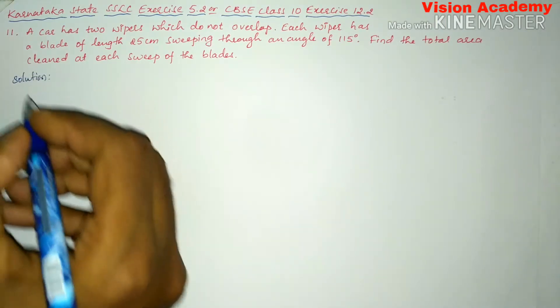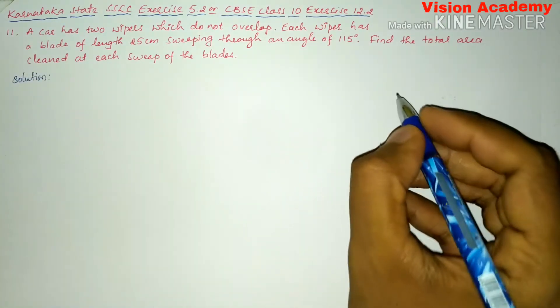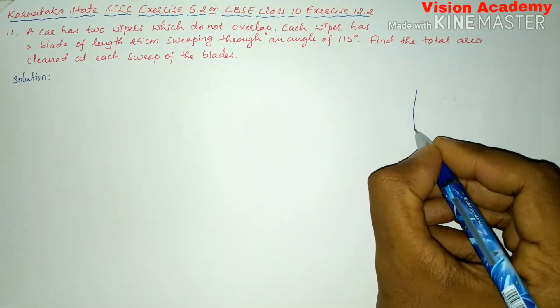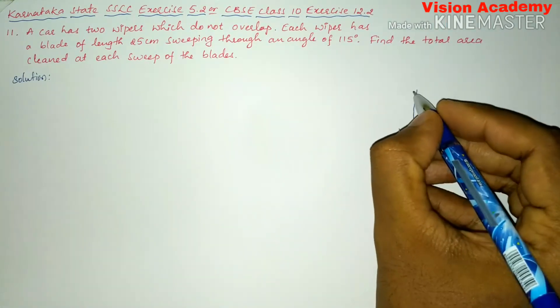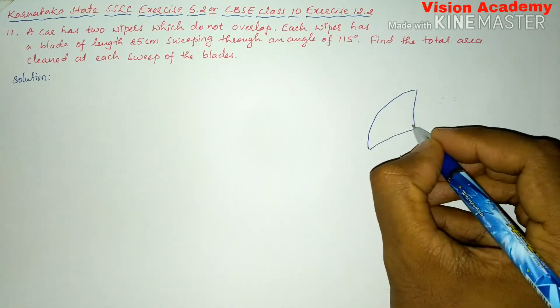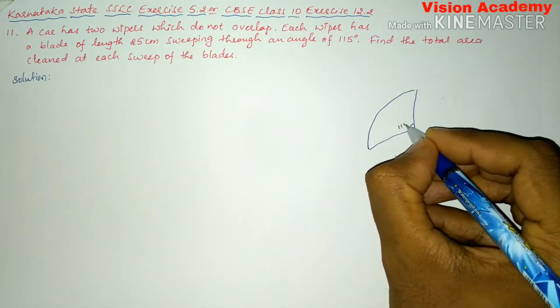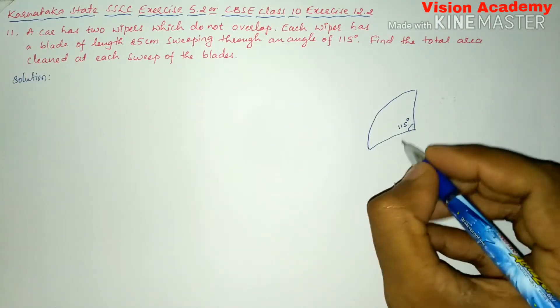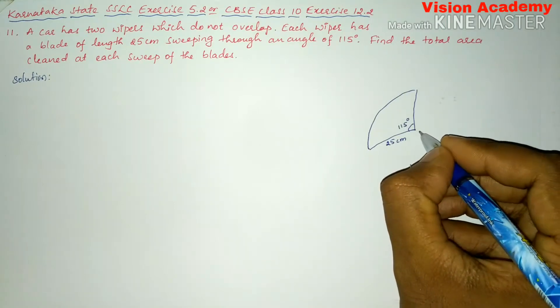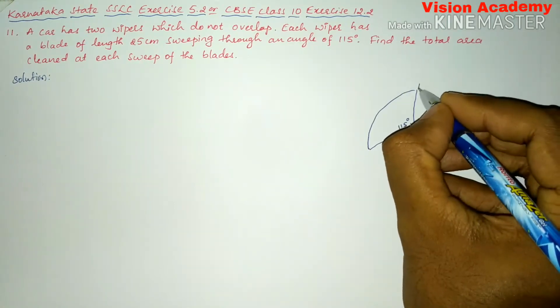So in the question they have given there are two wipers. Let us draw a wiper that cleans about 115 degrees whose length is 25 cm. So this is A, O and this is B.